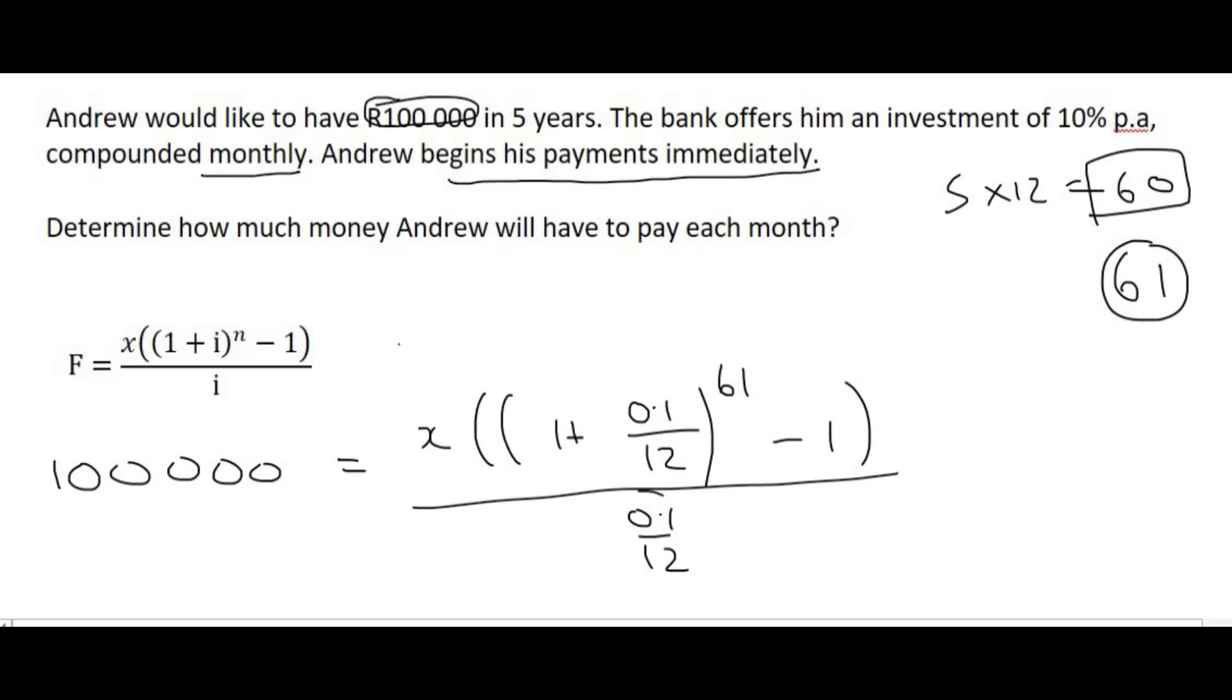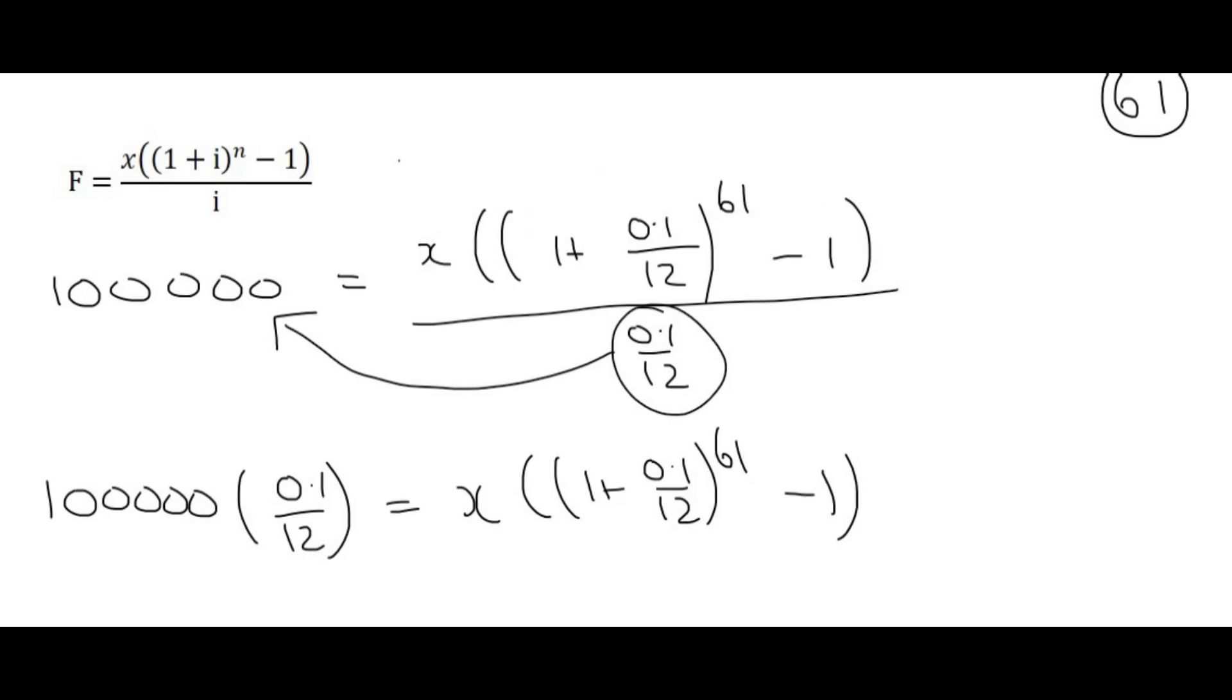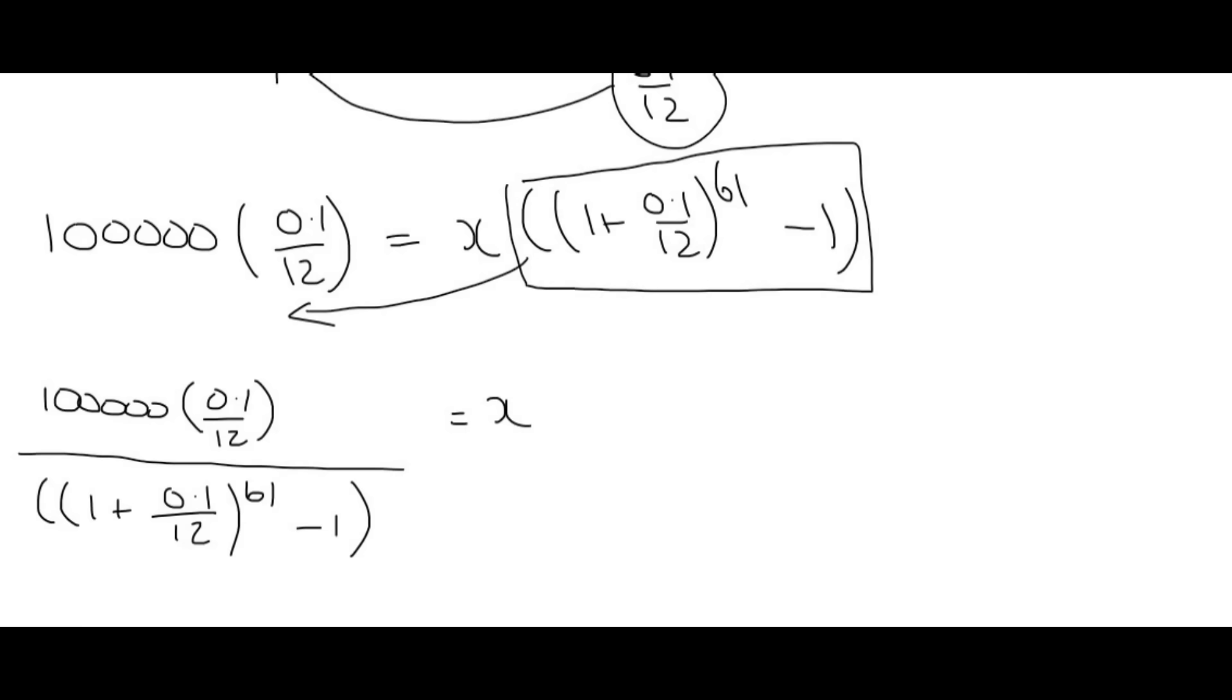Then you can just go ahead and calculate everything. The best way to do it is to first multiply the 0.1 over 12 to the left-hand side, and so we end up with that over there. Then the next best thing to do would be to take this whole term and divide it on the left-hand side. And if you go type all of that in on the calculator, your final answer should be R1,264.50. So that is the amount that Andrew will physically pay each month.